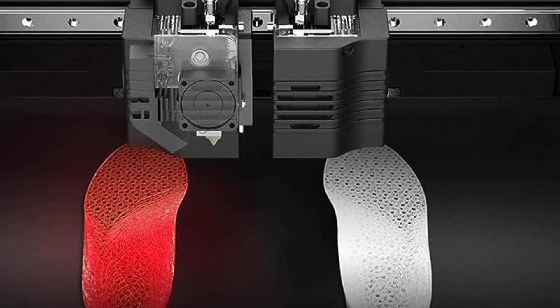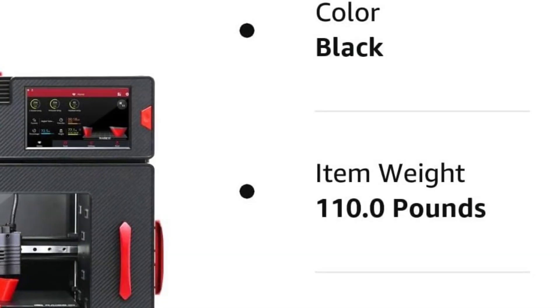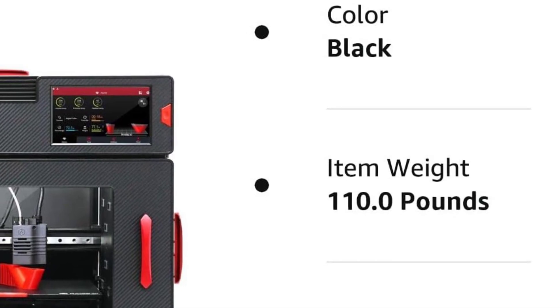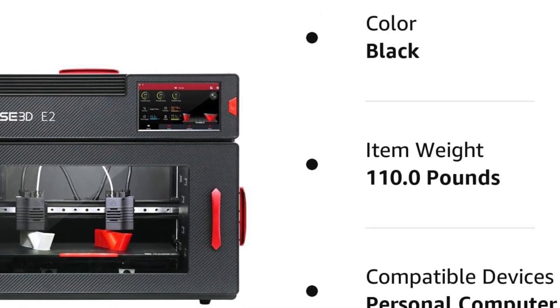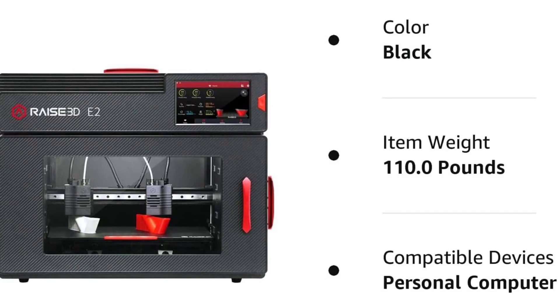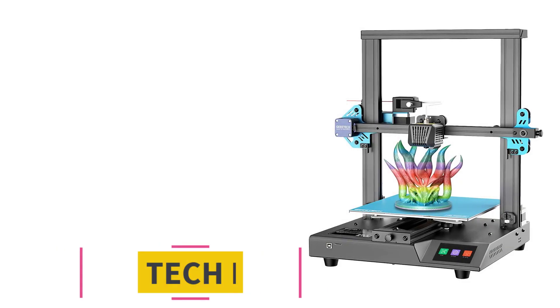It has high-end features like independent dual-extruders that allow inverse and duplicate 3D printing. If you don't have the extra change for a Pro 2 or Pro 3, the E2 is a worthy buy.